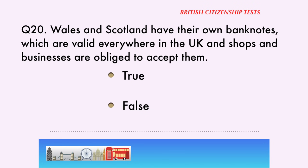Question 20. Wales and Scotland have their own banknotes, which are valid everywhere in the UK and shops and businesses are obliged to accept them. True or False? The correct answer is: False. Northern Ireland and Scotland have their own banknotes, but not Wales.